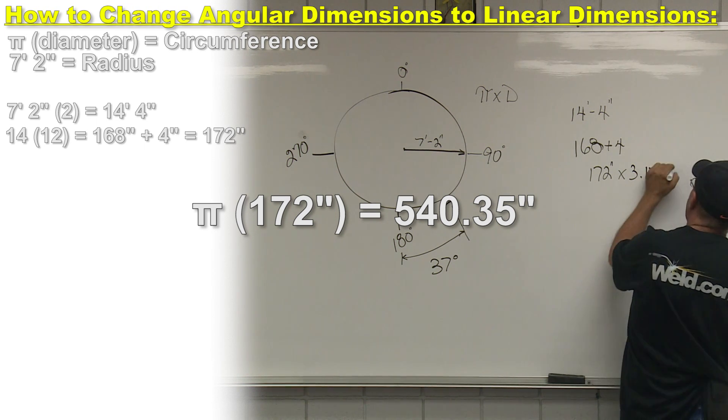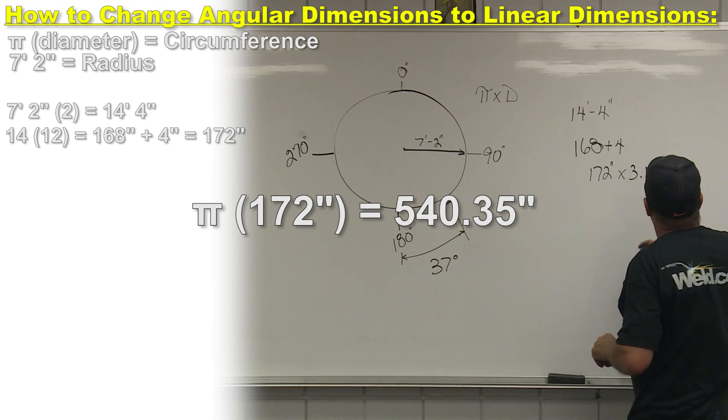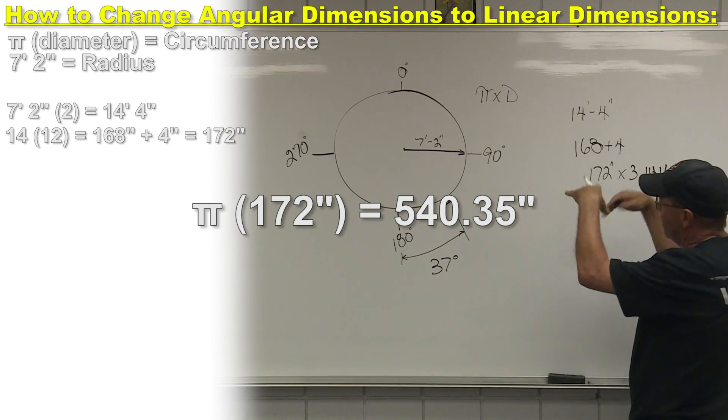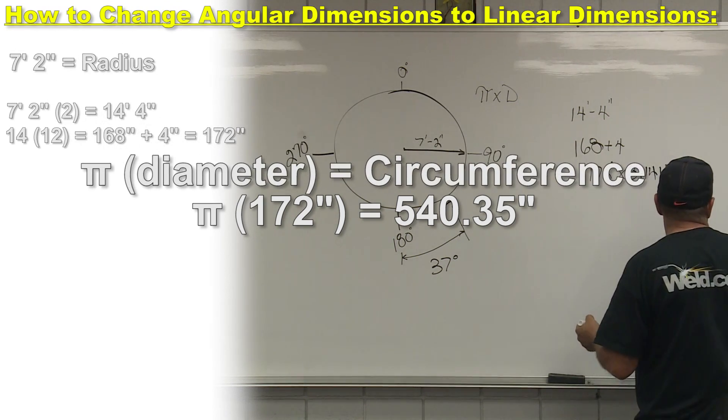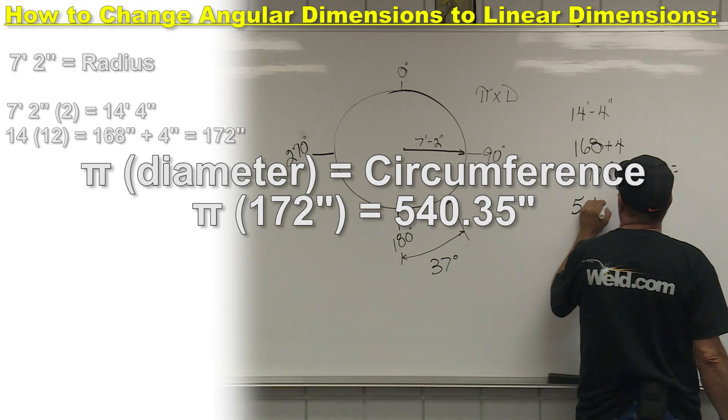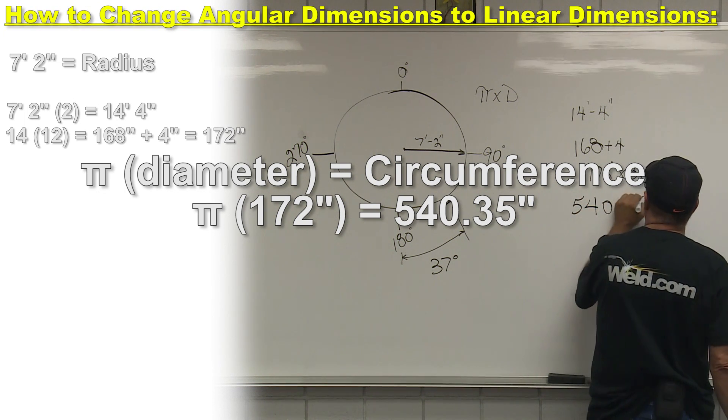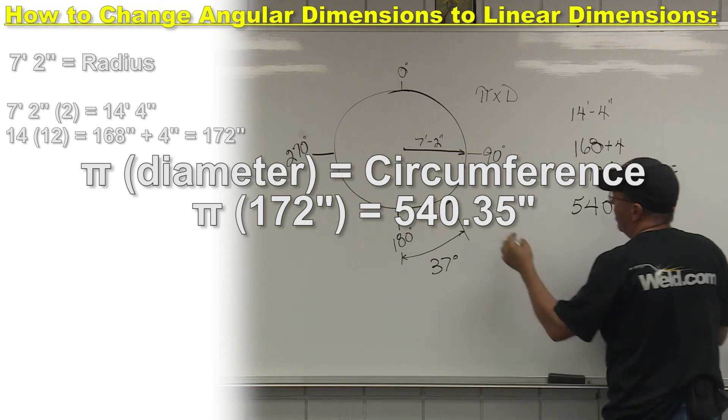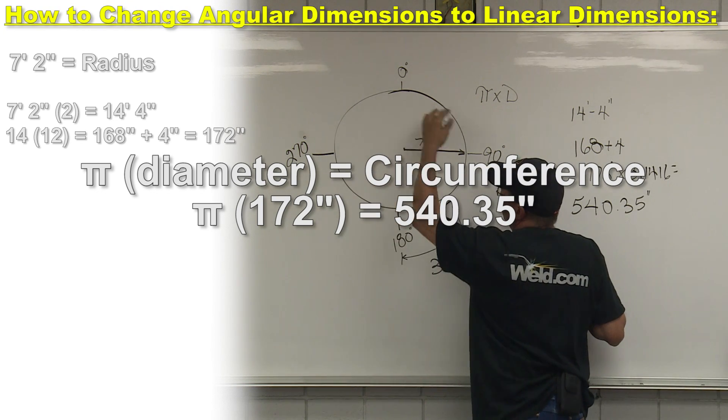May not have known what to do with it, but here we go. So we're going to take this and we're going to get some great big number. That great big number happens to be 540.35 inches. That's how big it is all the way around this thing.